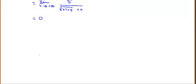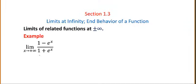As x approaches positive infinity, the denominator approaches positive infinity, so this limit is 0. That's another useful technique. Next, let's look at the limit as x approaches positive infinity of 1 minus e to the x, over 1 plus e to the x.